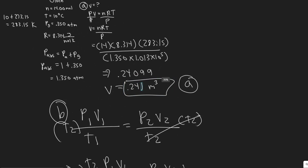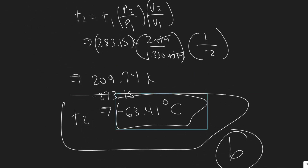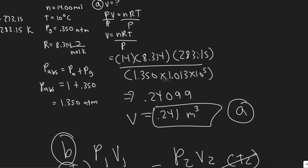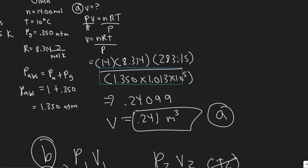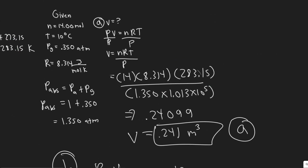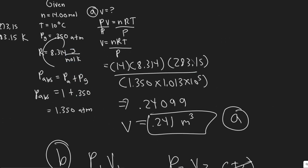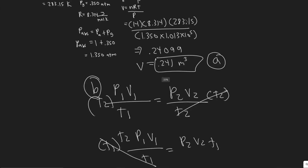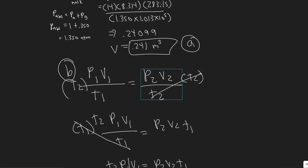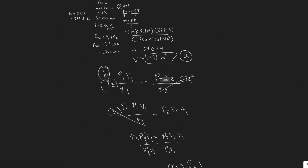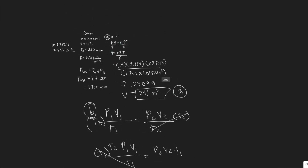To recap: for part A, the answer is 0.241 m³. For part B, the answer is approximately −63.4°C. We used PV = nRT for part A — the key steps were adding atmospheric pressure to get absolute pressure, converting pressure to Pascals, and converting temperature to Kelvin. For part B, we used P1V1/T1 = P2V2/T2, where initial conditions relate to final conditions, and only the temperature unit matters since pressure units cancel.